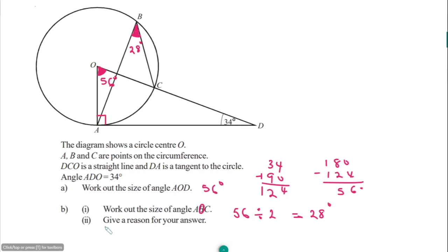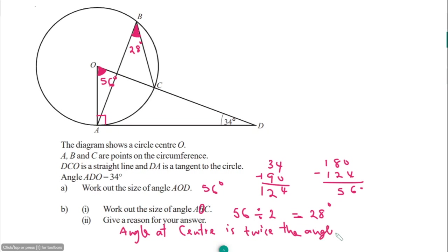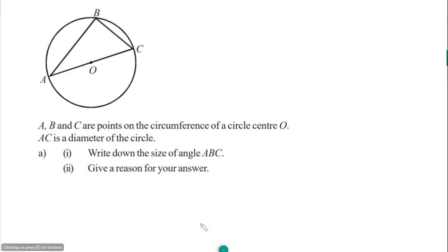The reason for angle ABC being 28 degrees: the angle at the center is twice the angle at the circumference. So angle ABC is 28 degrees, and that was very easy. Let's move on to the next question.